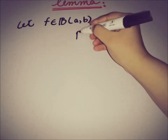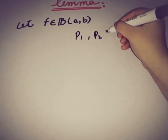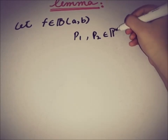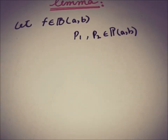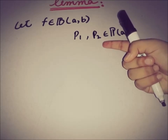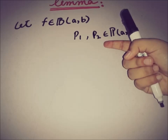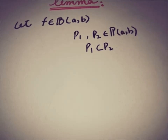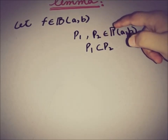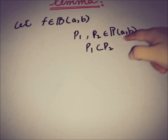Let's take a function that belongs to a bounded class, that is on [a, b] — so we'll take a bounded function from a to b. We'll take two partitions P1 and P2 from the set of all partitions over that same interval [a, b]. The relation between P1 and P2 is that P2 is a refinement of P1, or finer than P1, so we can write it as P1 is a subset of P2.